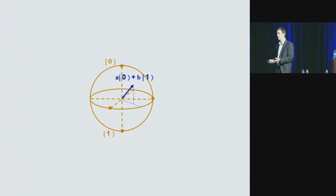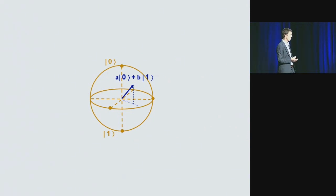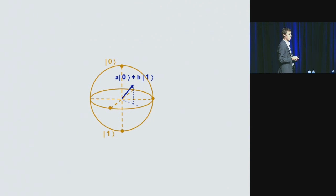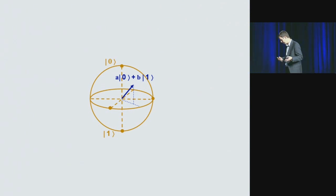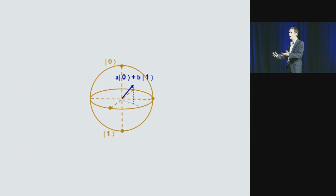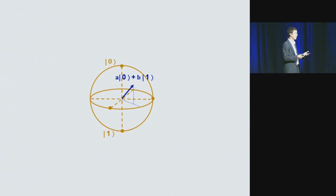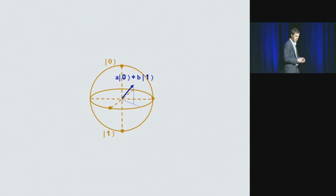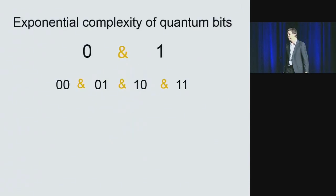By extension, in computation, a quantum bit where spin-up encodes zero and spin-down encodes one can also exist in superposition. You might wonder if this allows parallel computation. You might also wonder if this is just complicated language for something simple — isn't this just a classical analog variable instead of a binary digit? That's actually not the case.